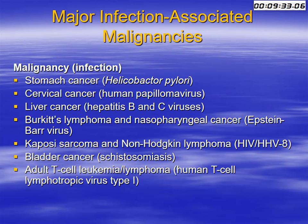The major infection-associated malignancies are: gastric carcinoma with H. pylori as a causative agent; cervical cancer with human papillomavirus as a causative agent; hepatocellular carcinoma with HCV and HBV as causative agents; Burkitt's lymphoma and nasopharyngeal carcinoma caused by Epstein-Barr virus; Kaposi's sarcoma and non-Hodgkin's lymphoma by HIV; bladder cancer by Schistosoma; and adult T-cell leukemia and lymphoma by human T-cell lymphotropic virus.